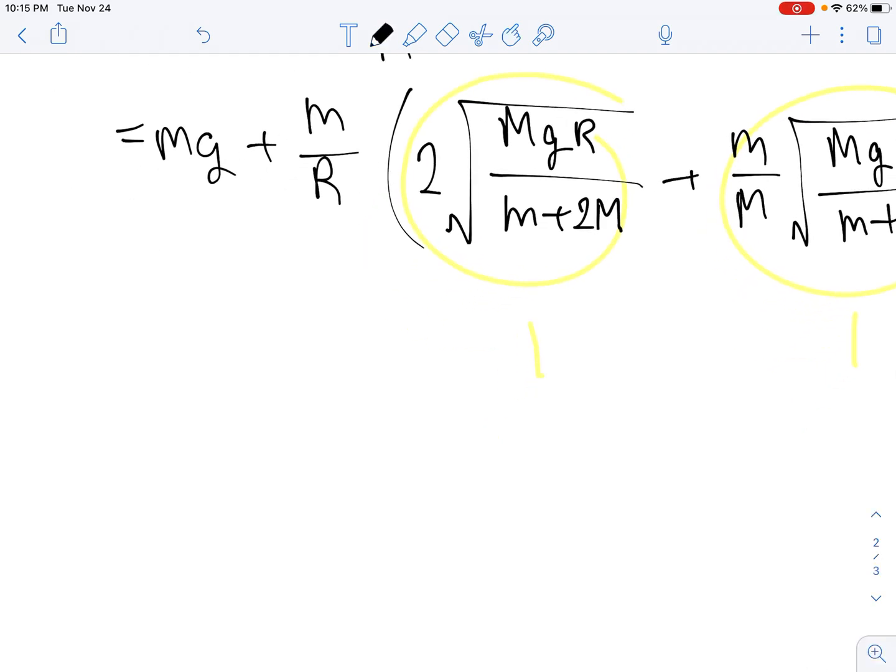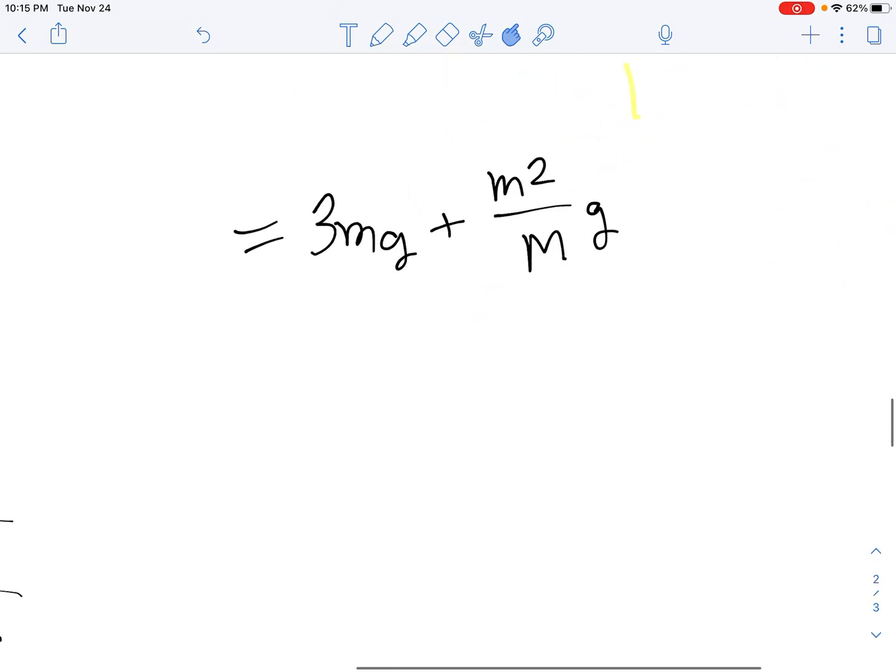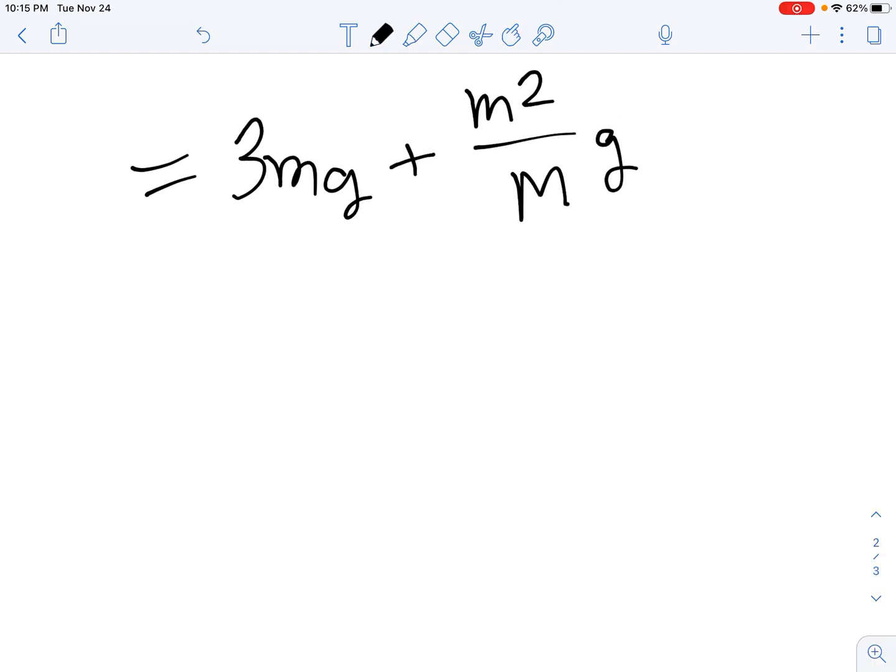And upon further simplification, we can obtain the equation 3mg plus little m squared over big M times g. This can be factored out so that it becomes mg times (3 plus m over M). And this is our answer.